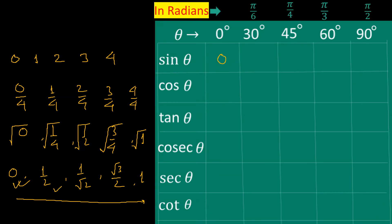So: sin 0° is 0, sin 30° is half, sin 45° is 1 by root 2, sin 60° is root 3 by 2, and sin 90° is 1.